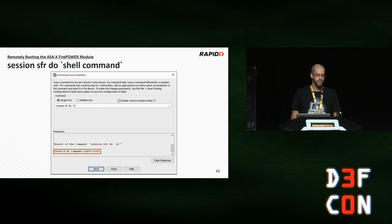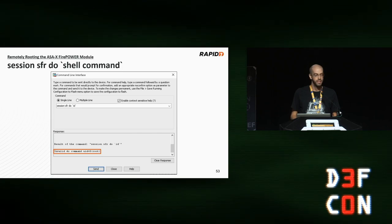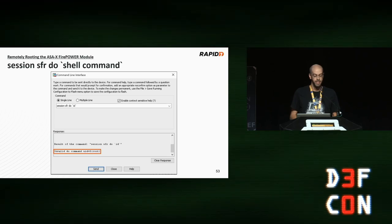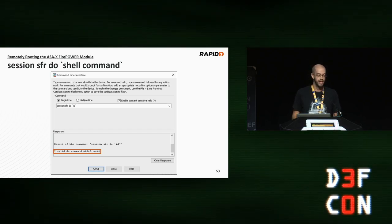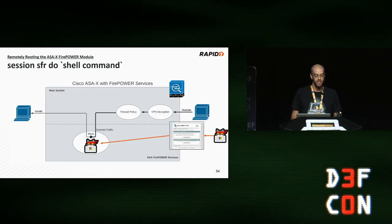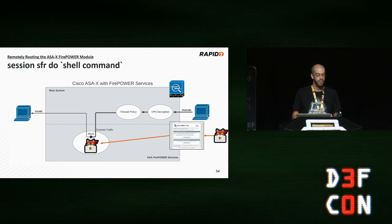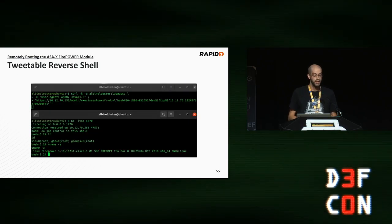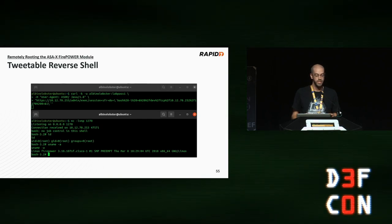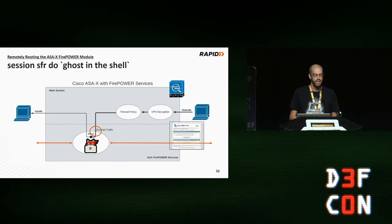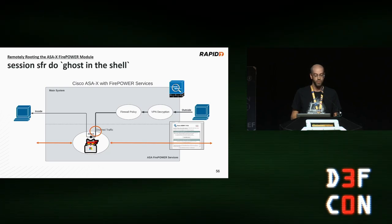So I started messing around with command injection vectors, and here's one that was actually successful. I issued the command 'session sfr do `id`' where 'id' is a Linux command that tells you who you executed as. The ASA responded with 'invalid do command, uid=0' — meaning root. We successfully executed the command as root within the virtual machine. An attacker over the internet can achieve a root shell on the Firepower module virtual machine by sending a rather simple command injection exploit — so simple you can fit it in a tweet. I used curl, bash, /dev/tcp, and netcat to throw the exploit and catch a reverse shell from the ASA.